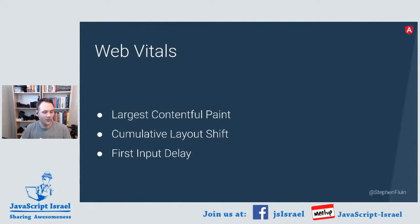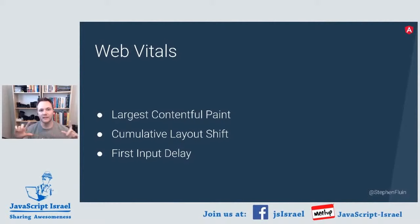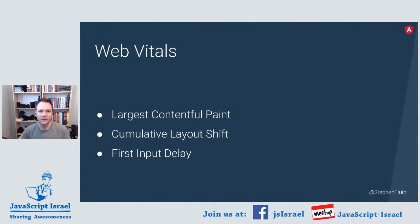There's a really nice set of metrics that the Chrome team has been pushing called Web Vitals. There are three of them. First is Largest Contentful Paint — what is the largest paint the browser has to do? Generally the largest paint includes the most content, so that's probably the one the user cares about most. In the past we've seen metrics like First Contentful Paint. This is a continuing journey from the Chrome team to figure out what metrics are most meaningful to users.